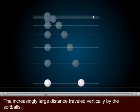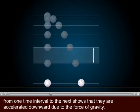The increasingly large distance traveled vertically by the softballs, from one time interval to the next, shows that they are accelerated downward due to the force of gravity.